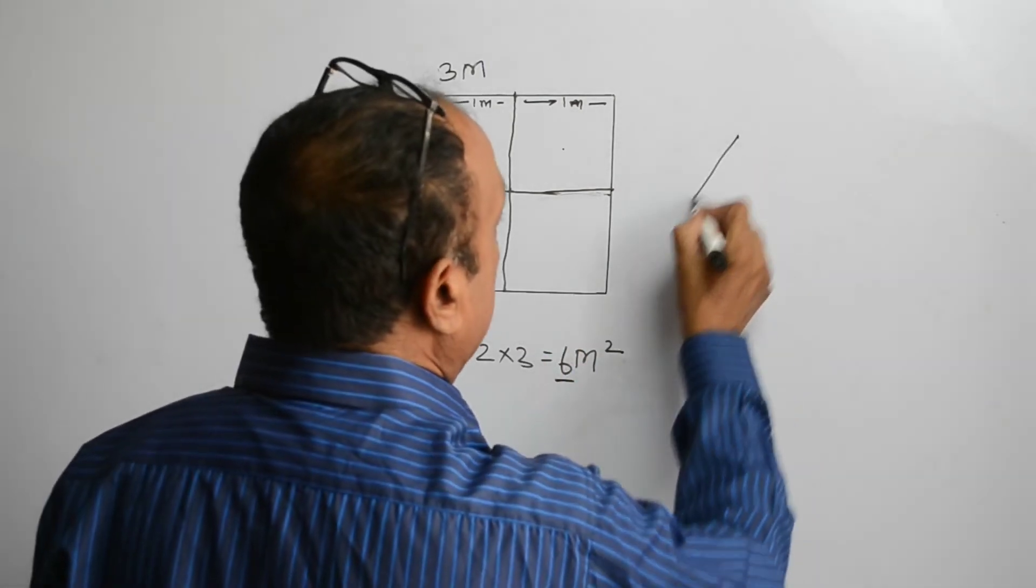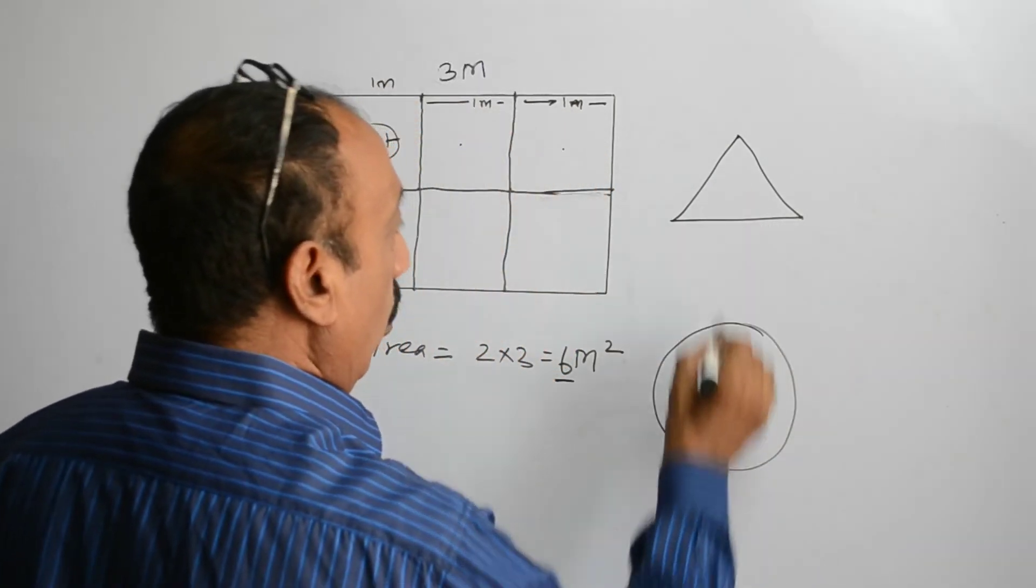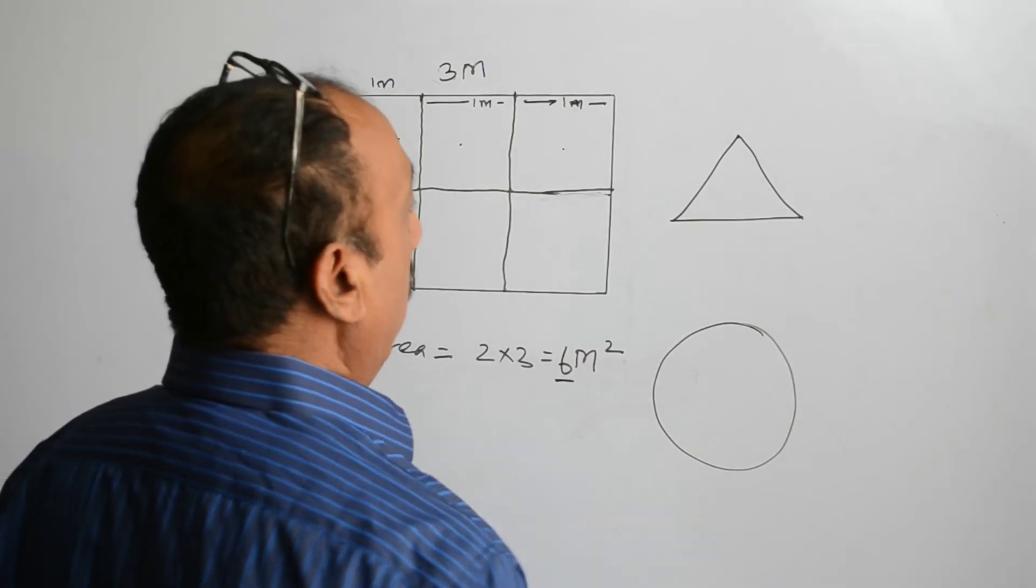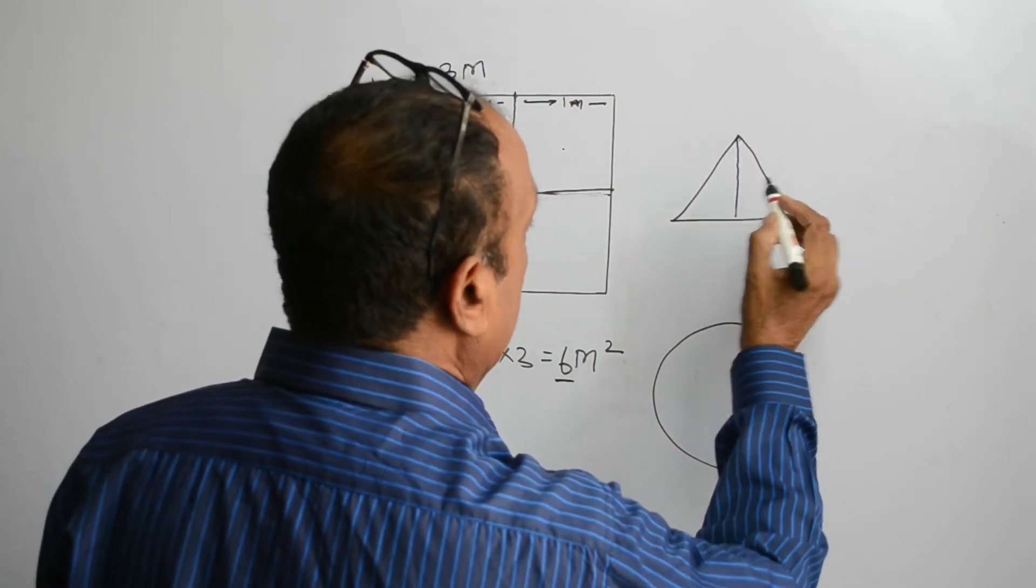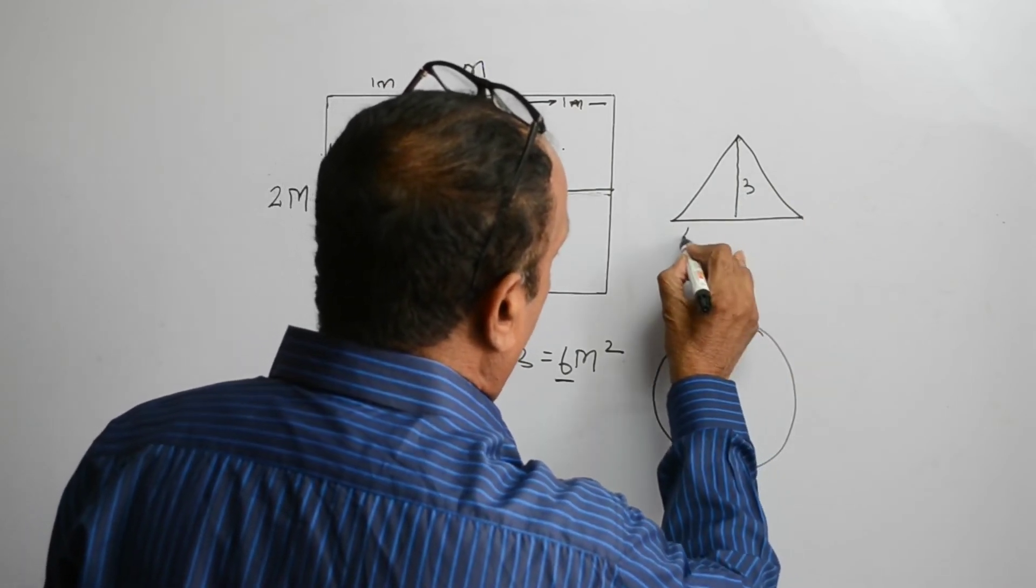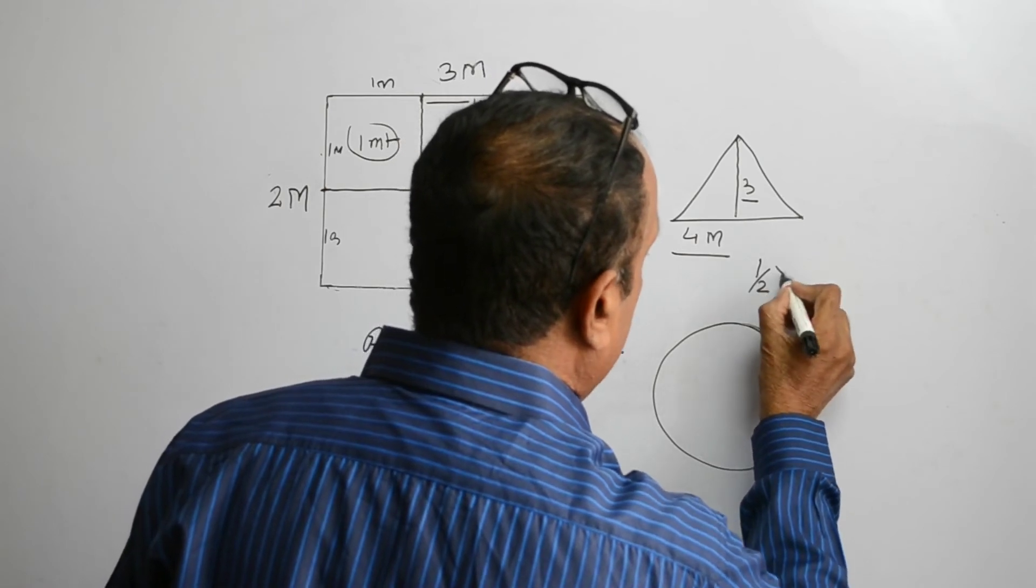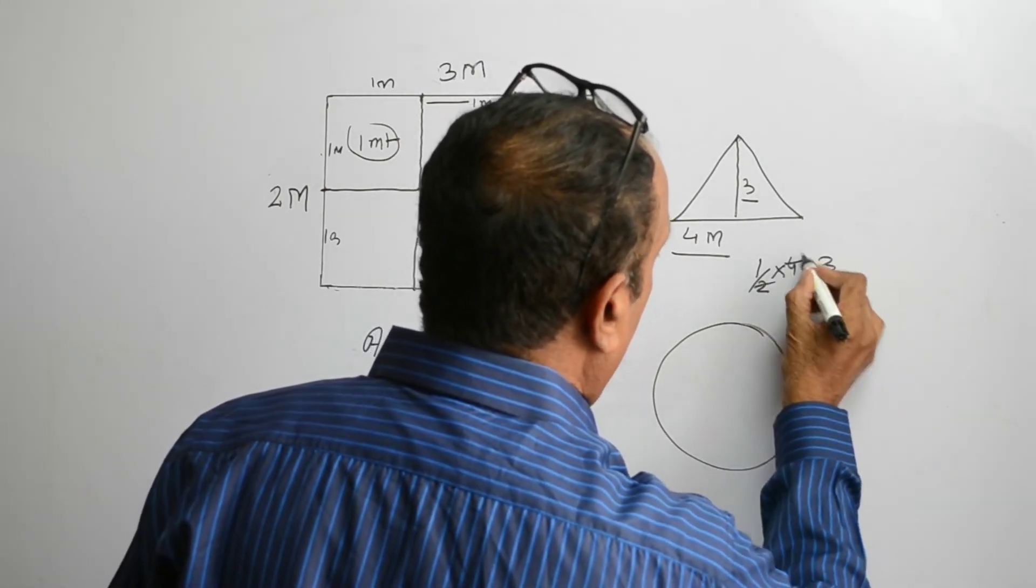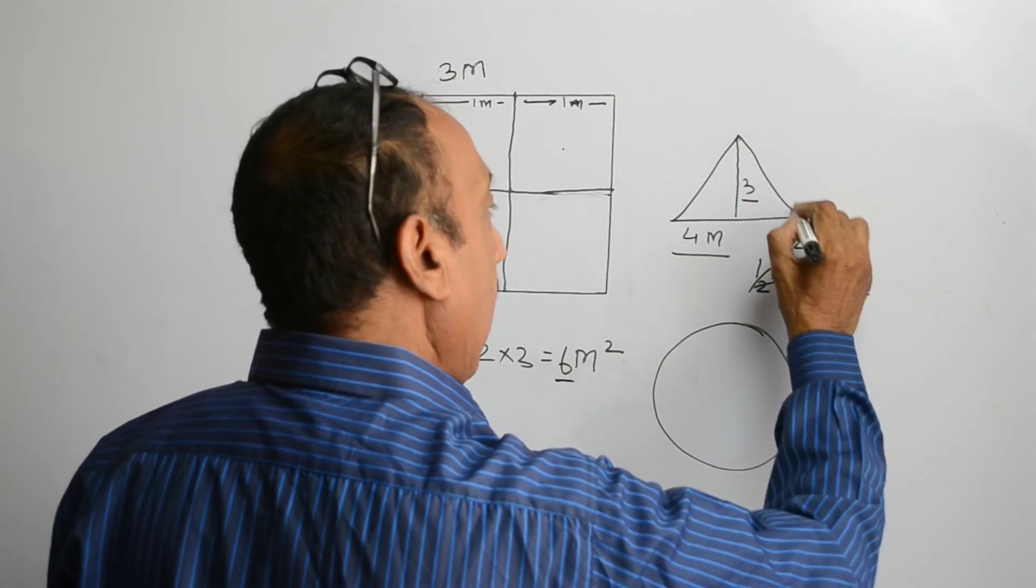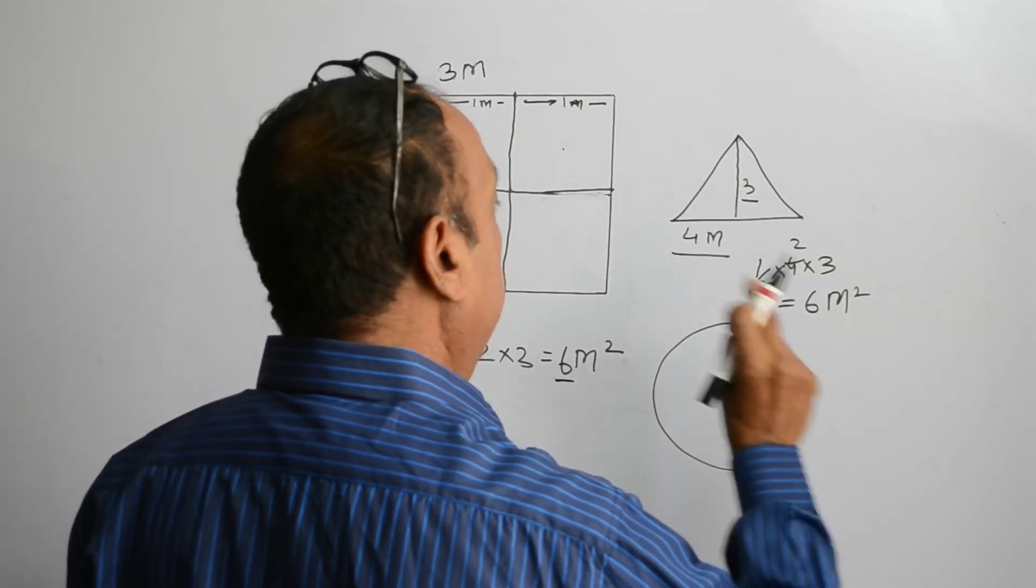In any figure, let it be a triangle, let it be a circle, the area enclosed in these figures will also be written as meters square. For example, let the height is 3 meters and the base is 4 meters, then the area will be equal to half base into height. The area enclosed in this rectangle will be equal to 6 squares of 1 meter each.